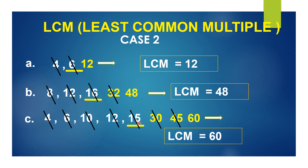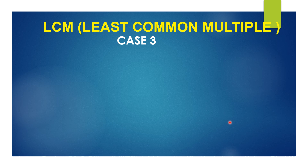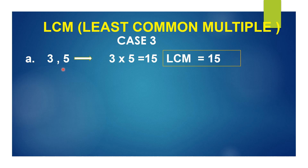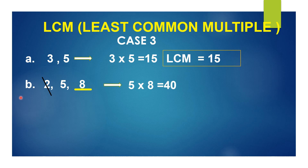In general, without this trick, you would have to write all the multiples of each number and find the common ones. Now Case 3: consider 3 and 5 — these are prime numbers, so directly multiply 3×5=15. The LCM of 3 and 5 is 15 — very easy. One more example: 2, 5, and 8. Identify the bigger number — 8. Is 8 divisible by 2? Yes — cancel 2. Now 5 and 8 are prime numbers, so directly multiply 5×8=40. Therefore, the LCM of 2, 5, and 8 is 40.